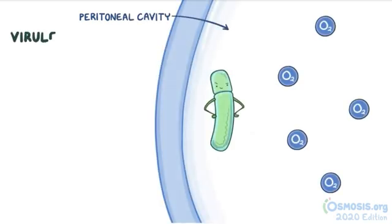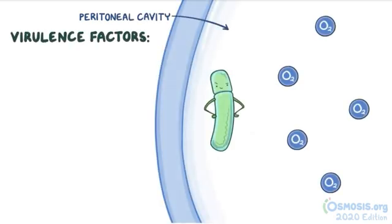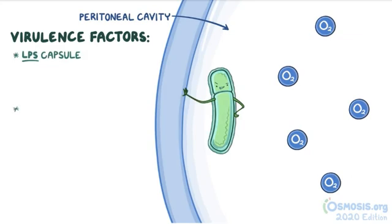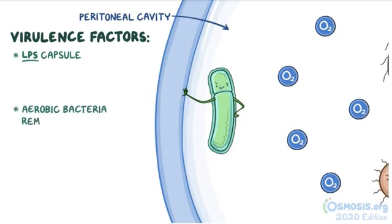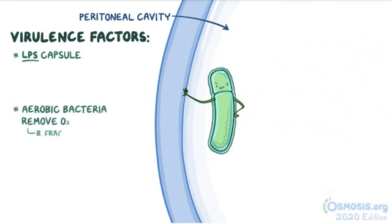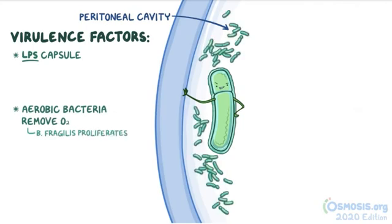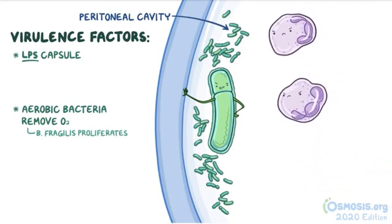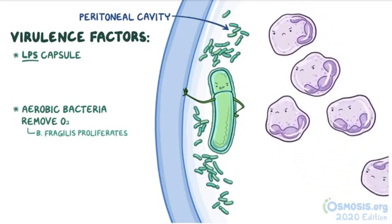In the peritoneal cavity, Bacteroides fragilis can use its virulence factors and cause disease. First, it has a lipopolysaccharide capsule, or LPS for short, which it uses to attach to the surface of the peritoneal cavity. At the same time, the aerobic bacteria that tagged along remove the oxygen from the peritoneal cavity, allowing Bacteroides fragilis, the obligate anaerobe, to proliferate.